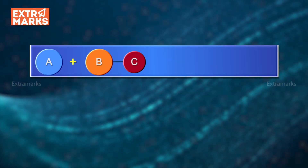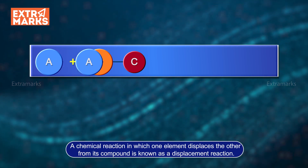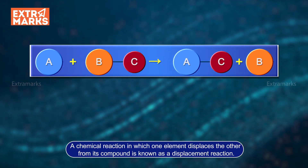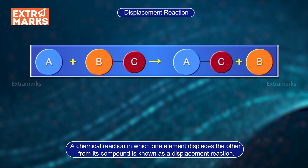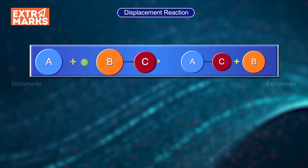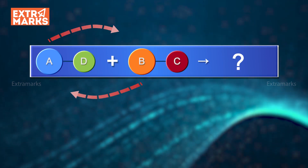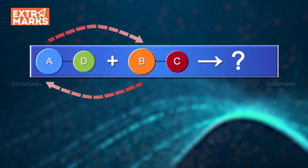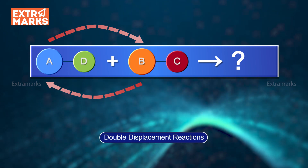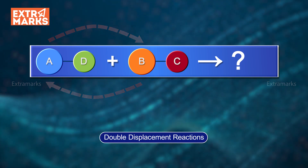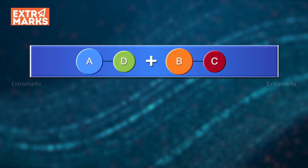You may recall that a chemical reaction in which one element displaces the other from its compound is known as a displacement reaction. Now, can there be a reaction in which two metal ions displace each other from their compounds? Yes, these types of reactions are known as double displacement reactions. Let's learn about double displacement reactions.